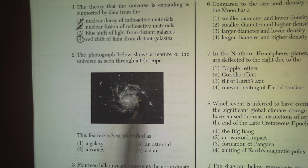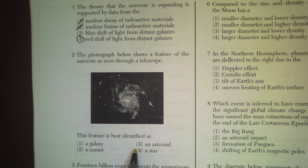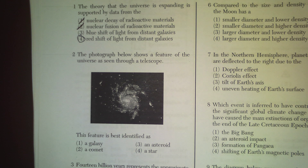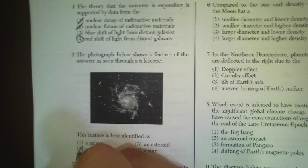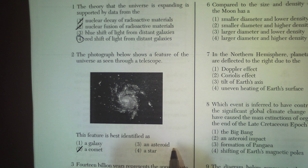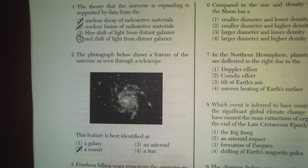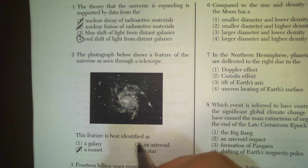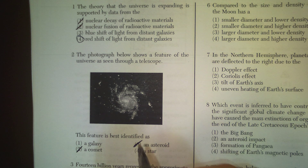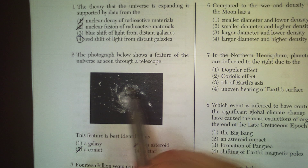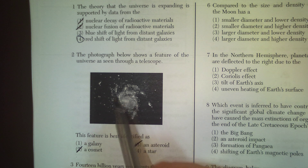So if you look at this, we can go choice by choice. If you look at a comet, it should be just a big chunk of rock and ice flying through the sky — definitely not that. An asteroid should be a large rock floating through space — it doesn't look like that either. A star should be just one ball of burning gas.